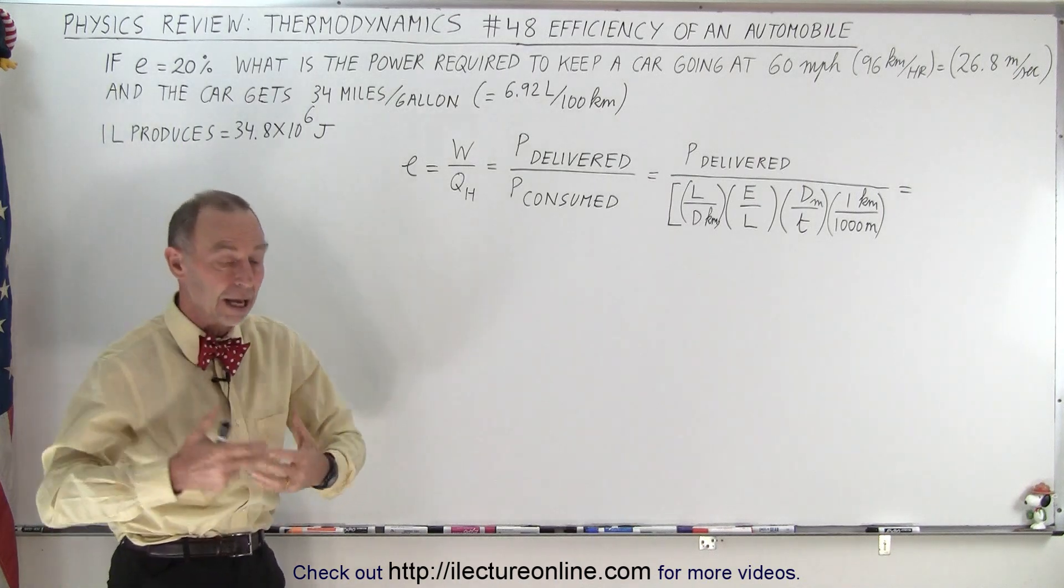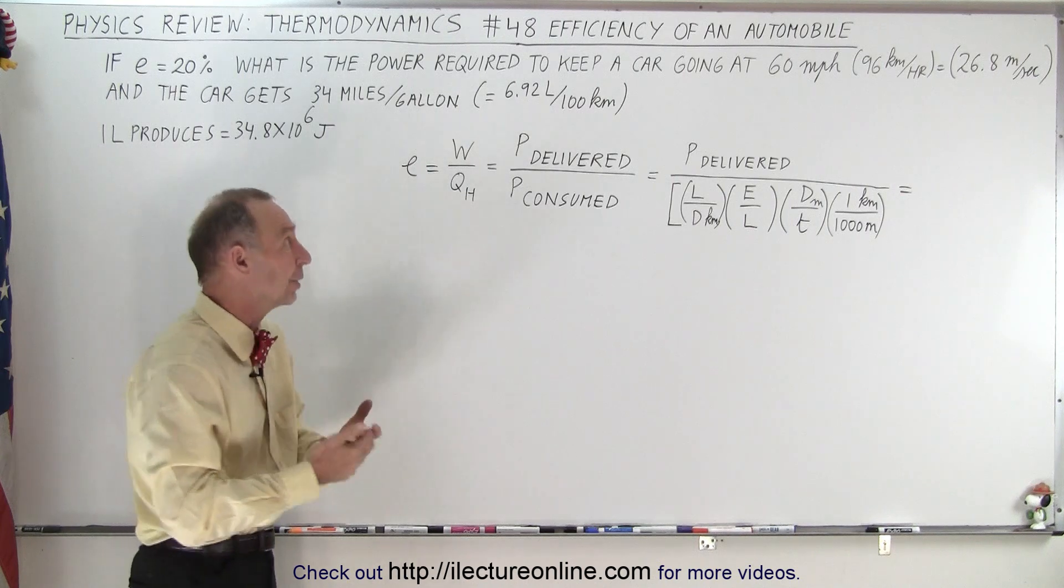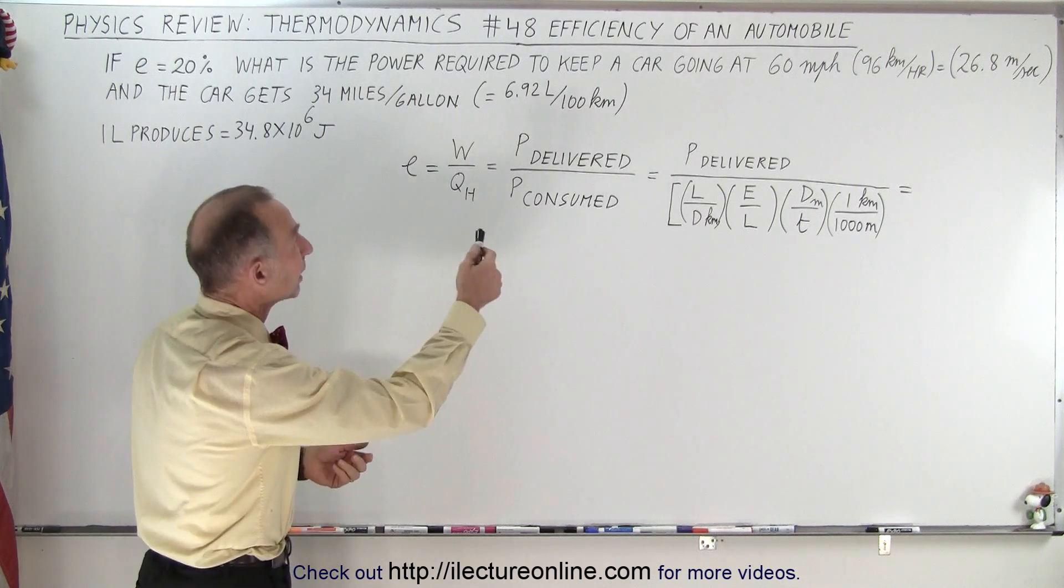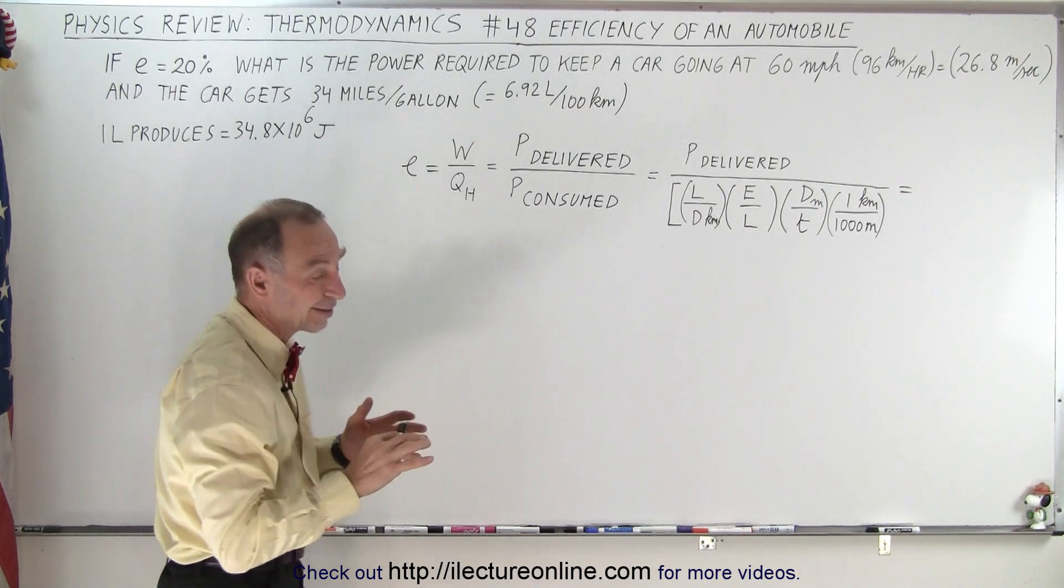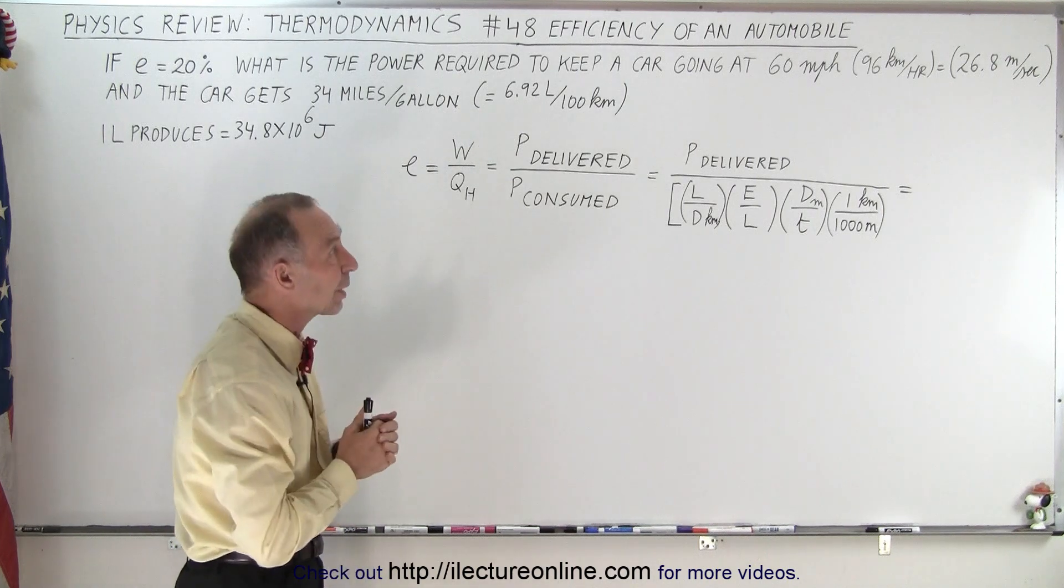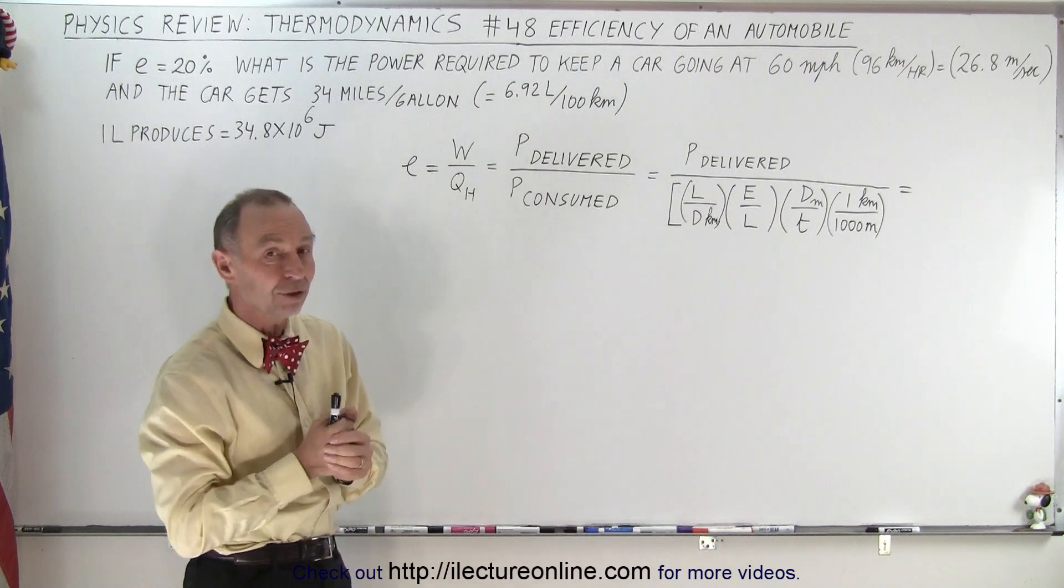So how much power do we need, how much power does the engine need to generate in order to keep the car going at 60 miles per hour, which is about 96 kilometers per hour, or about 26.8 meters per second.